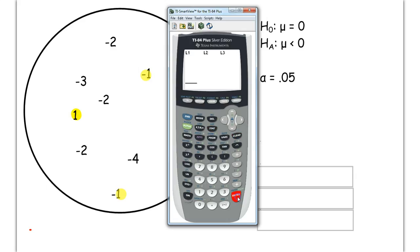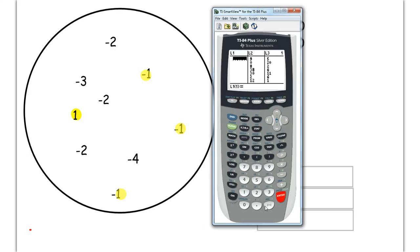We're going to put this in our stat list. So I go to stat, edit. And the values I have are negative 1, negative 1, negative 1, and positive 1.